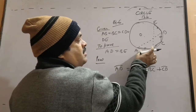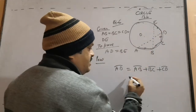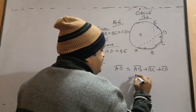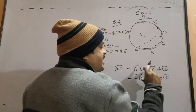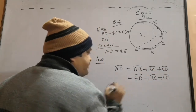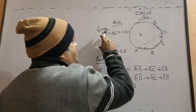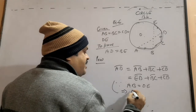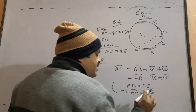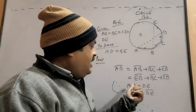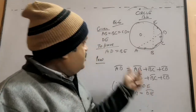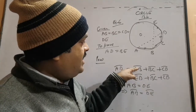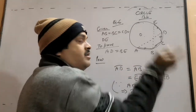This arc AD — you can replace arc AB by arc DE. Give the reason: since chord AB equals arc DE — I have told you in one of the videos that equal chords cut equal arcs. So when chord AB and DE are equal, then arc AB and arc DE will be equal. That's why I replaced AB by DE.